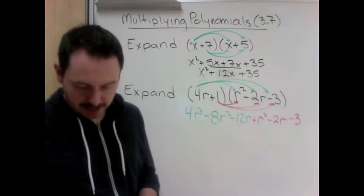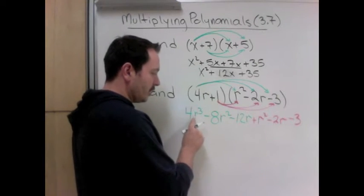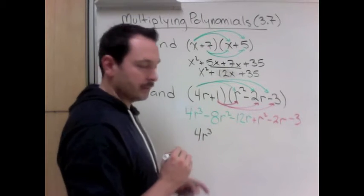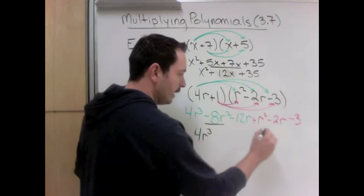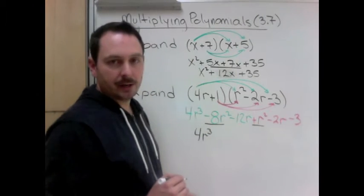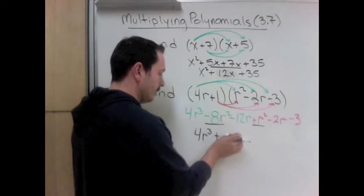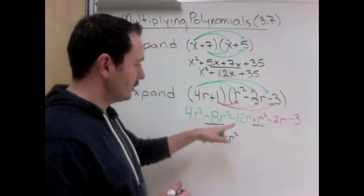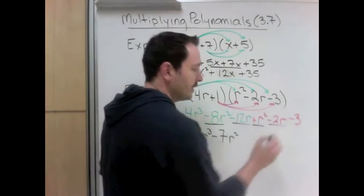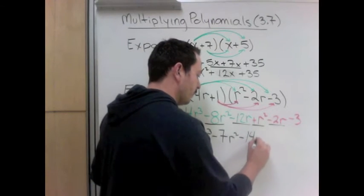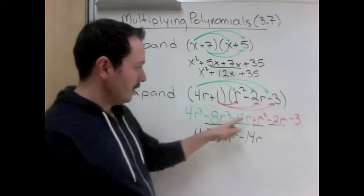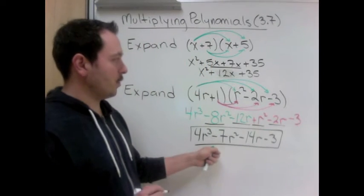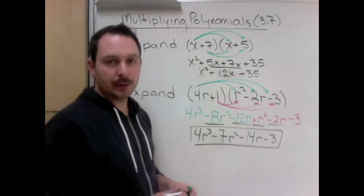And now I need to collect my like terms. I only have this r³ and there's no other r³, so I have 4r³. I have minus 8r² and plus r². So minus 8 plus 1 is minus 7r². Now the r's: I have minus 12r's and minus 2r's. So I have minus 14r's, and all I'm left with is this minus 3. So this is the expanded form of our binomial by our trinomial.